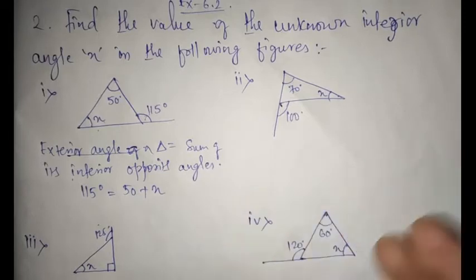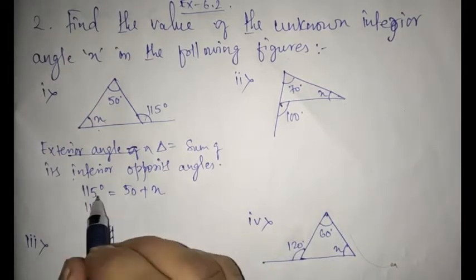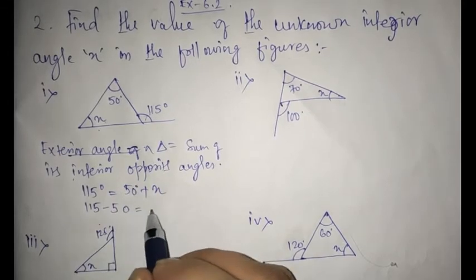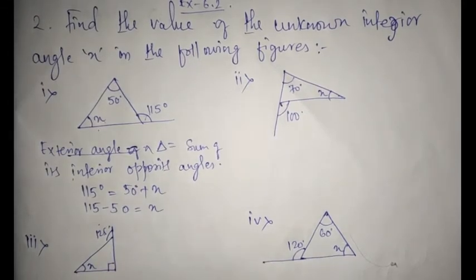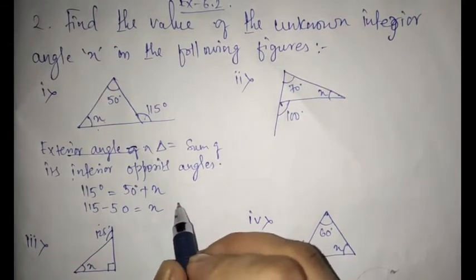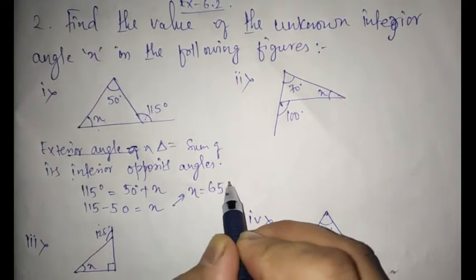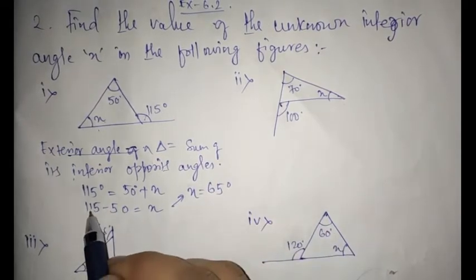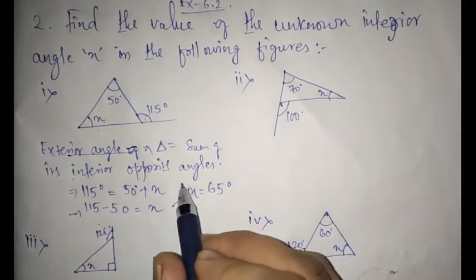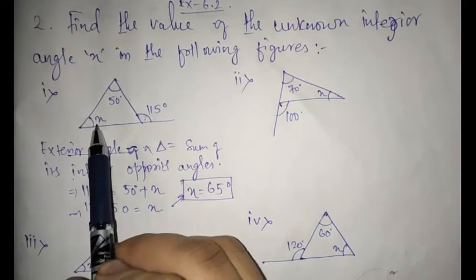Sum of the interior means 50 plus x. So can you find the value? 115 will come here and it will become minus 50, and the value of x you are going to get. So when you subtract this, x is equal to 65 degrees. So 115 minus 50 is 65 degrees. Your x value — the other interior angle — is 65 degrees. So when you add this, you are going to get 115.